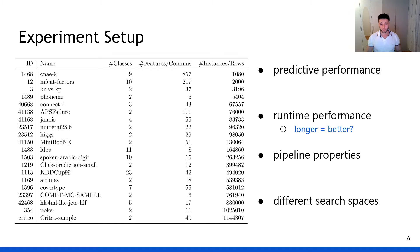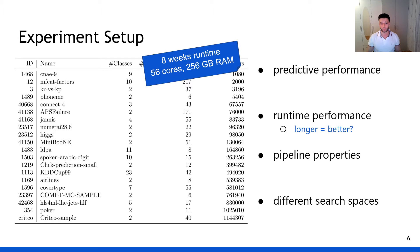Before we go on to the results, I'd like to briefly touch upon the methodology. We analyzed 20 classification datasets, primarily consisting of medium to large datasets of up to 1 million samples. These were chosen through OpenML, DARPA D3M, and we also took a sample of the popular criteria dataset. The goal of our experiments is to provide empirical evidence of the impact downsampling may have on genetic programming-based AutoML. We investigate key properties such as predictive performance, runtime performance, fundamental pipeline properties such as length and distribution of operators, as well as the impact of different search spaces. For our results, we report macro-average F1 test score. All in all, our experiments took eight weeks of straight compute time using a 56-core server.